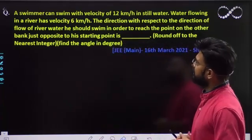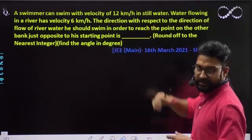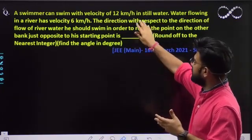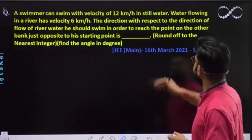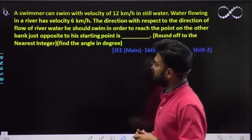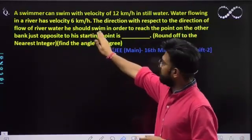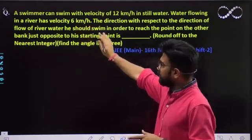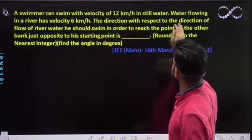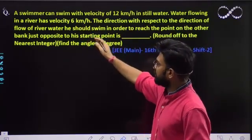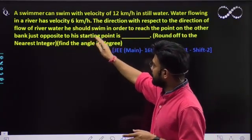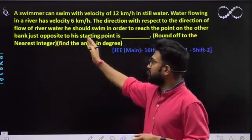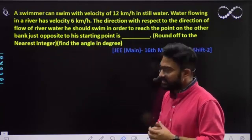A swimmer can swim with a velocity of 12 km per hour in still water. Water flowing in a river has a velocity of 6 km per hour — the river's velocity is given. The direction with respect to the direction of the flow of the river water he should swim in order to reach the point on the other bank just opposite to his starting point is?